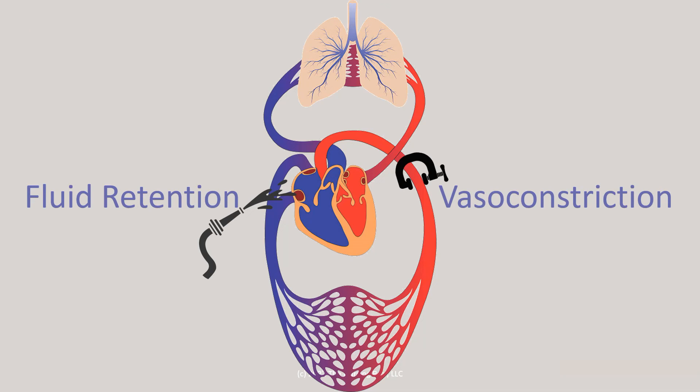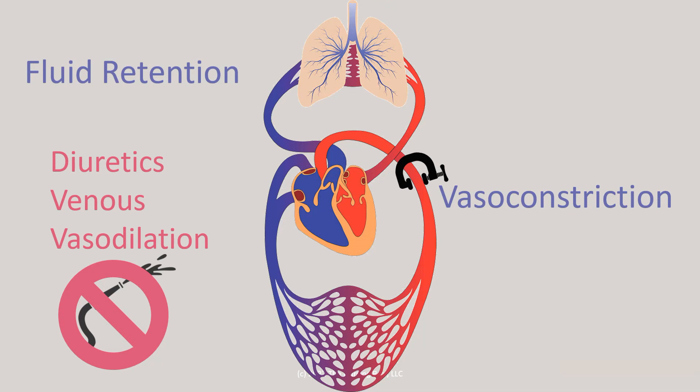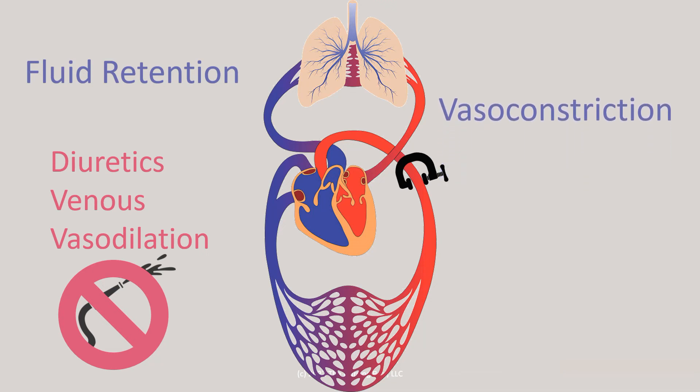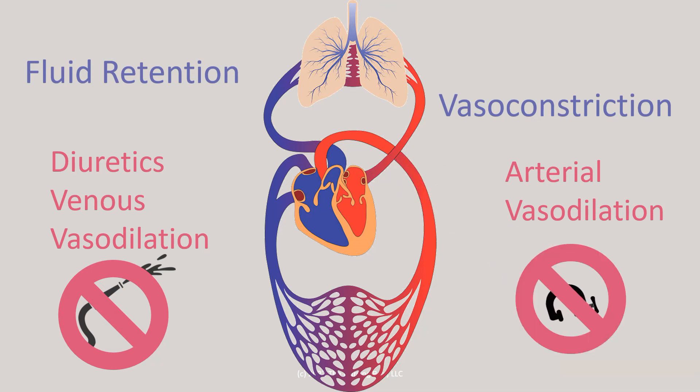What we'd like to do to treat that is remove the extra fluid by using diuretics and venous vasodilators to open up that system and pull fluid away from the heart. On the vasoconstriction side, we'd like to cause some arterial vasodilation. We can do that with medication, or by increasing cardiac output so that we don't have that stimulus to cause vasoconstriction.